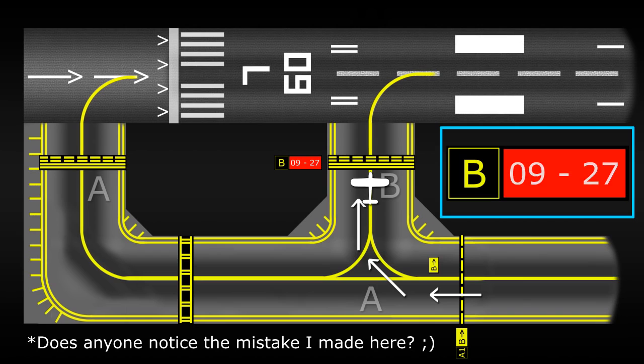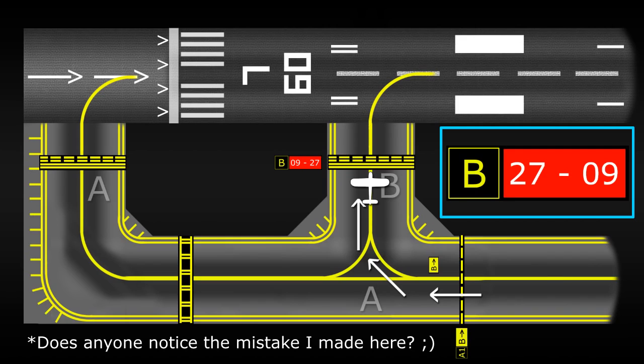Now, if the numbers were reversed like this, that would mean that the 27 end of the runway is to the left and the 09 end is to the right. This helps a pilot identify which direction to turn and which end of the runway is in which direction. I hope that makes sense.